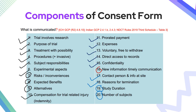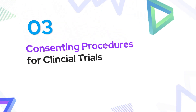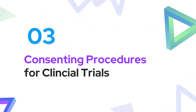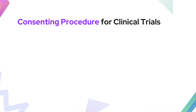Overall, the components of the consent form cover all aspects including the subject's responsibility, the trial's responsibilities, what is happening in the trial, and the focus of the trial. Whenever someone asks you to describe what a consent form consists of, these are the aspects you should be able to convey.